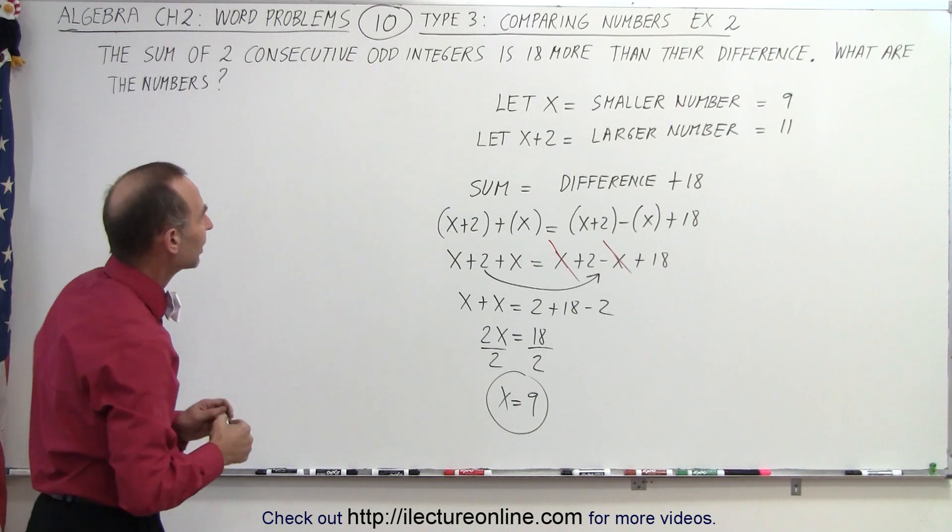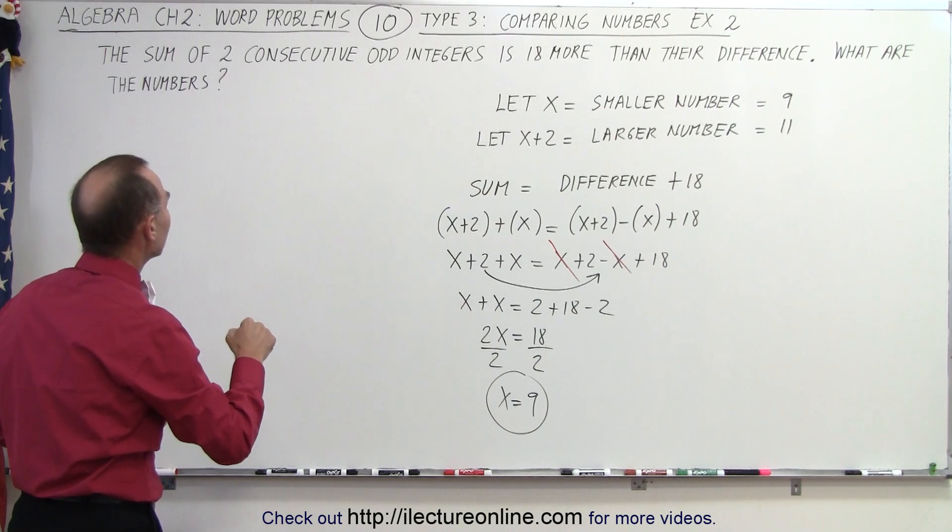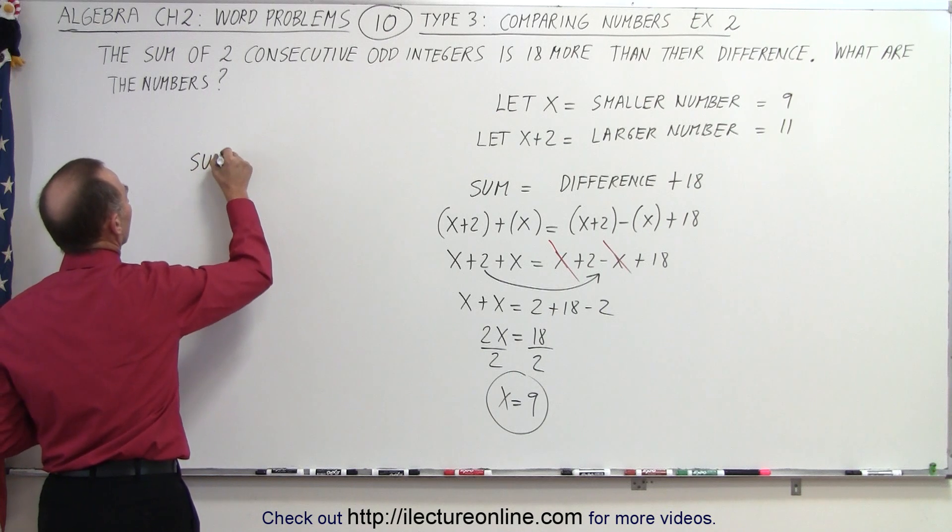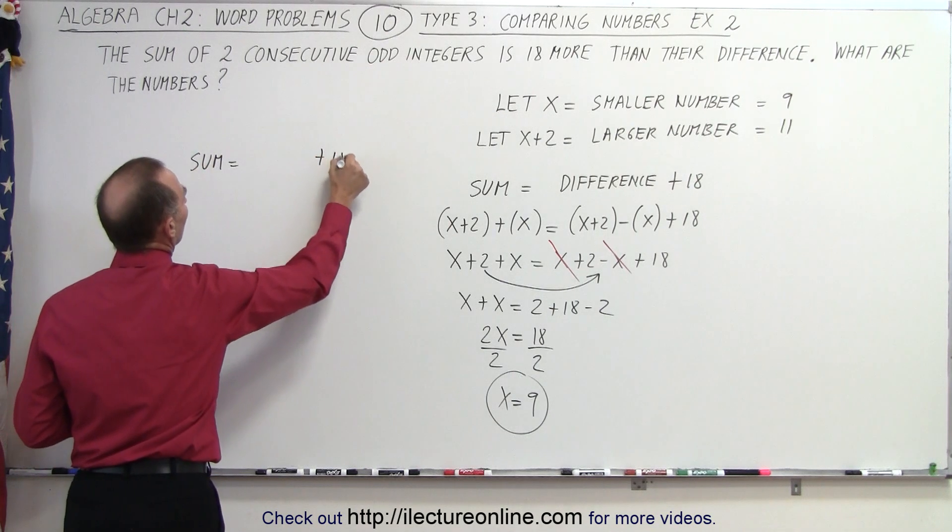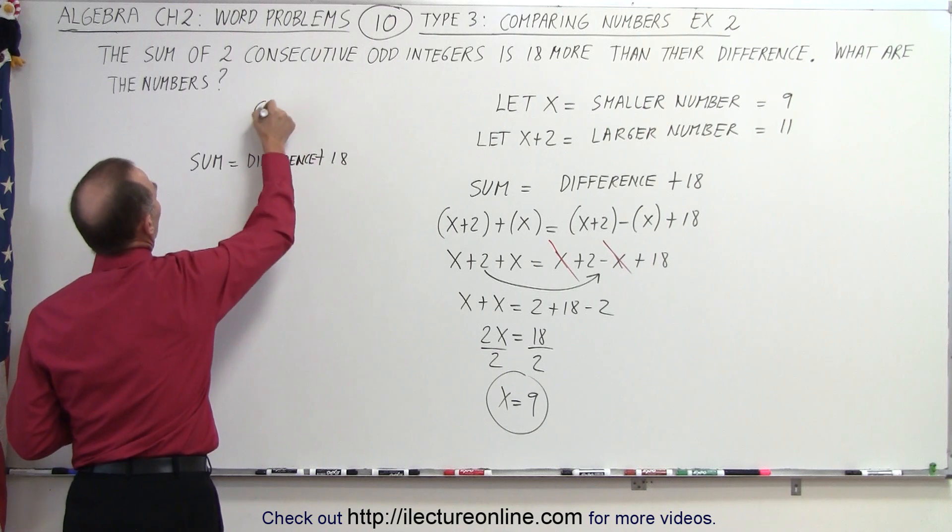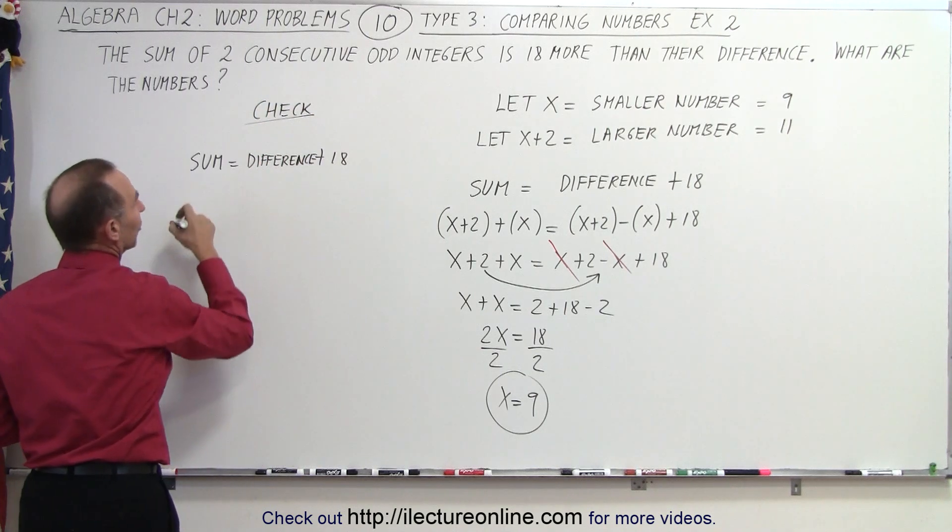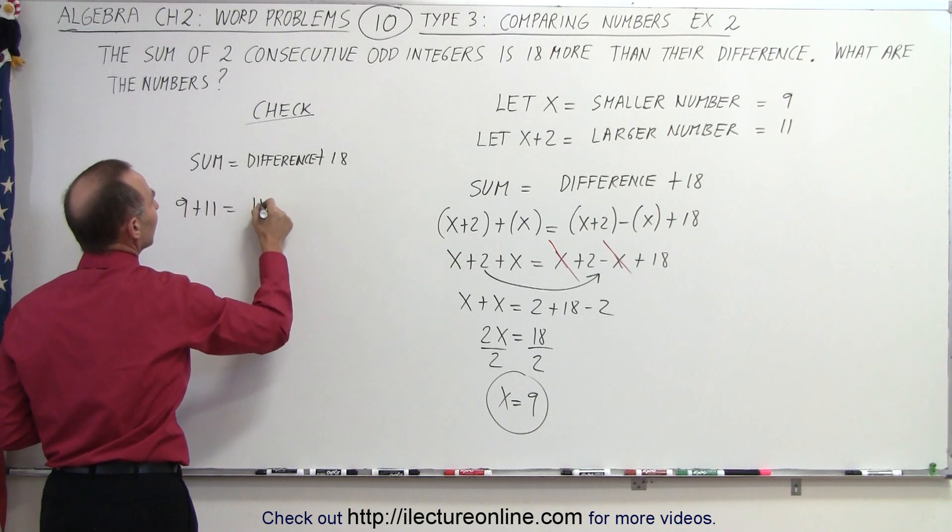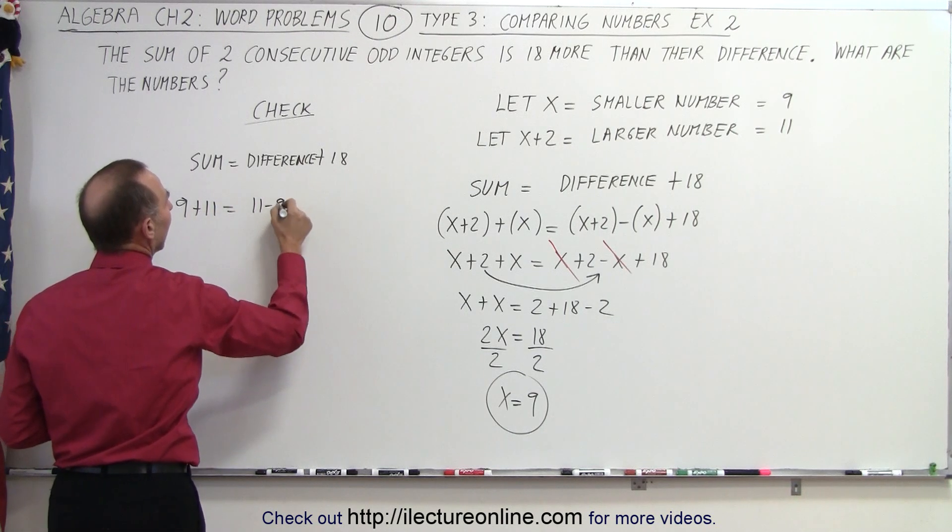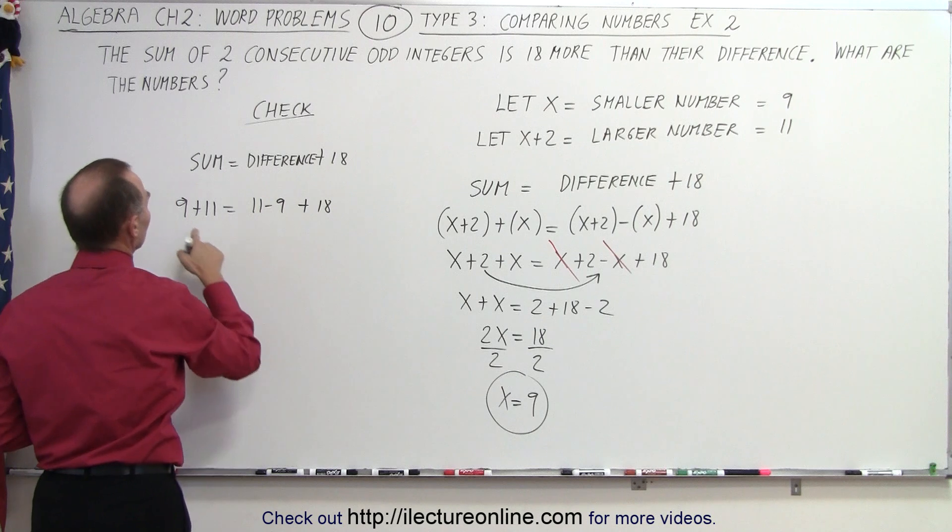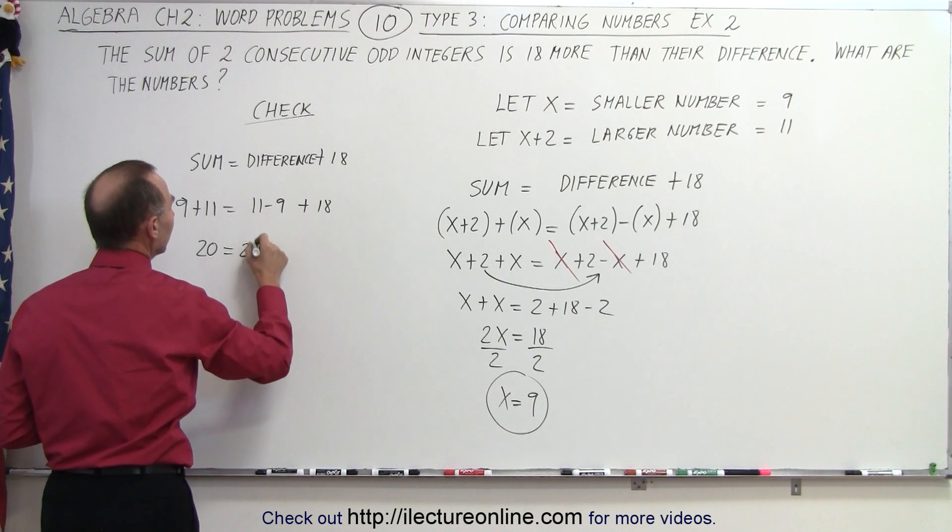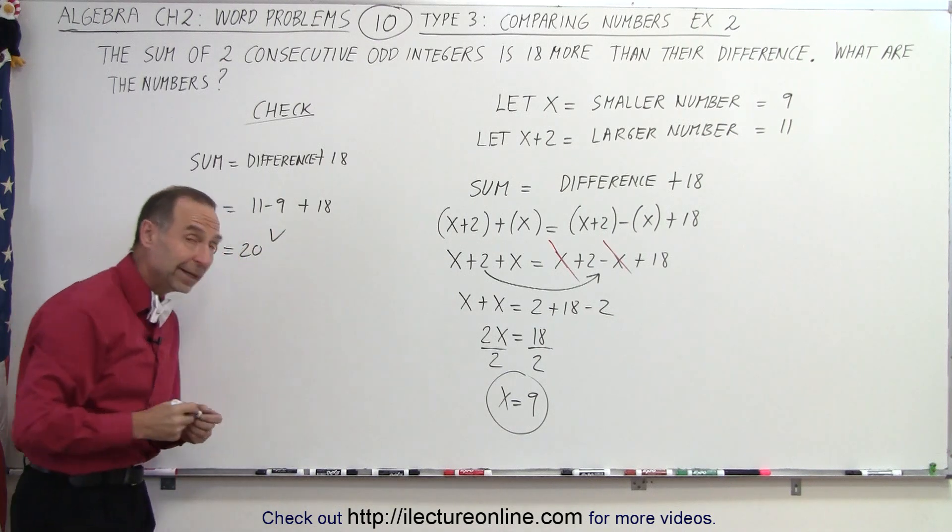Just to make sure we did it correctly, let's plug those values in and see if they're correct. So the sum must equal 18 more than their difference. So here we do a check. The sum of the two numbers would be 9 plus 11. The difference would be 11 minus 9, and we add 18 to that. So 9 plus 11 is 20. That's equal to 2 plus 18, which is 20. And therefore since 20 equals 20, we picked the right numbers. And that's how it's done.